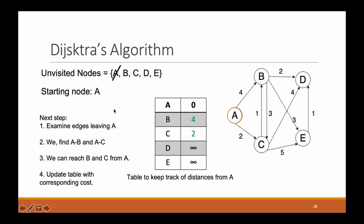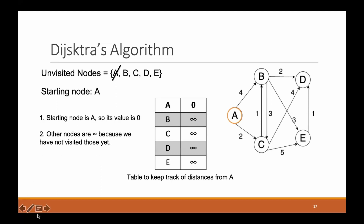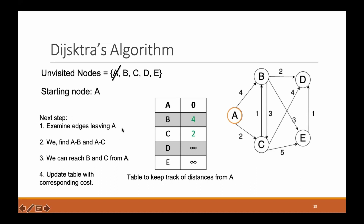First we examine the edges leaving A. We can see there are two edges leaving A: AB with cost four and AC with cost two. We select the smallest one, but before that we update the table. There are two edges leaving A — AB and AC — so we can now reach B and C from A. The cost to reach C is two, and the cost to reach B is four, so we put those in the table. That's why those cells are now shown in green.